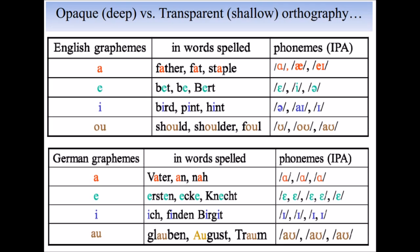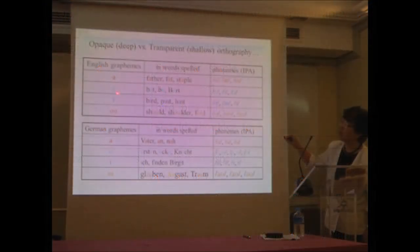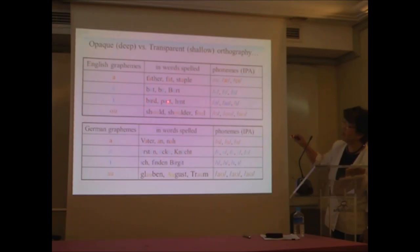This is English. The grapheme spelled A in word spell is 'father, path, staple,' the same alphabet stands for different pronunciation. And then the same applies to E: 'bet, be, burr.' I: 'time, hint.' O: 'shoe, shoulder, hole.' The same spelling are pronounced differently. And it makes English a horrible language.